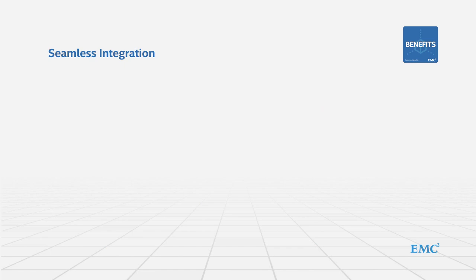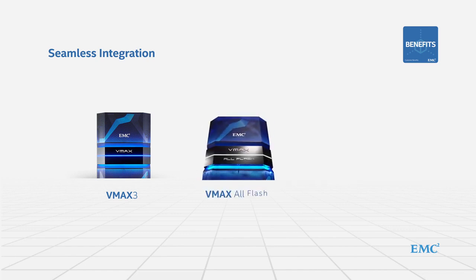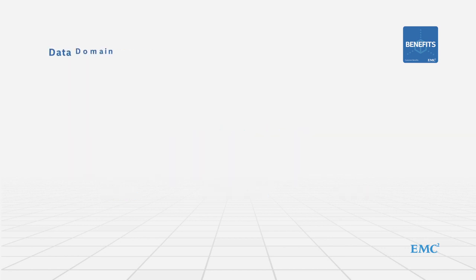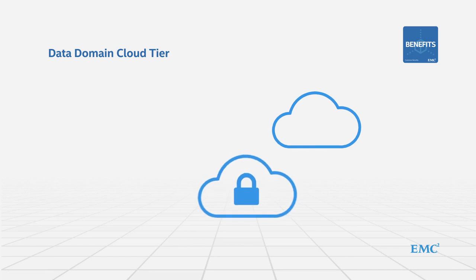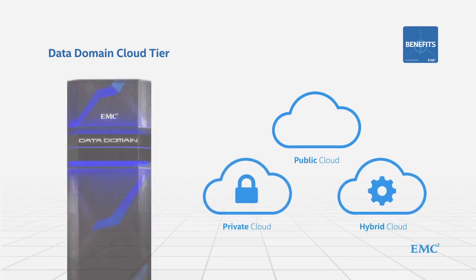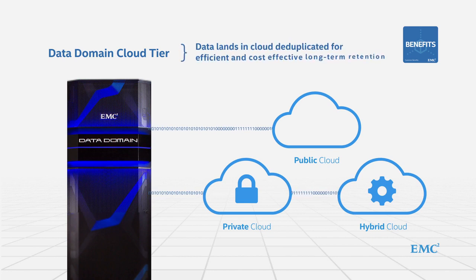Additionally, Data Domain provides advanced integration with most popular applications, allowing users to backup directly from the application or directly from primary storage — such as VMAX 3, VMAX All Flash, or XtremIO — to protection storage through the Data Protection Suite for applications. With Data Domain Cloud Tier, clients can natively tier data to a public, private, or hybrid cloud for long-term retention. Only unique data is sent directly from Data Domain to the cloud, and data lands on cloud object storage already deduplicated for a highly efficient and cost-effective solution.